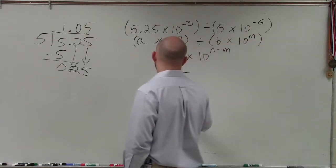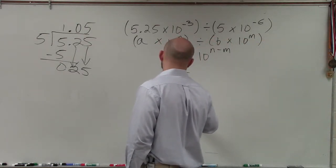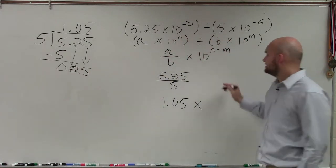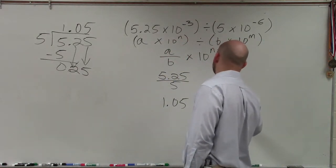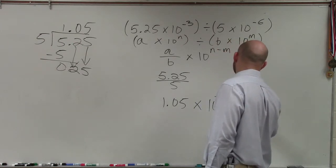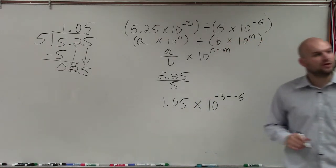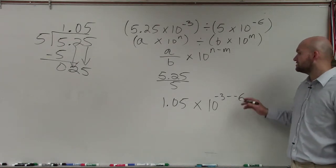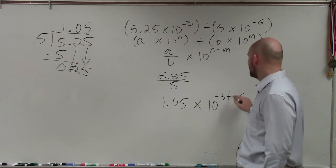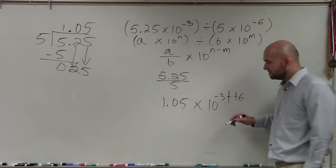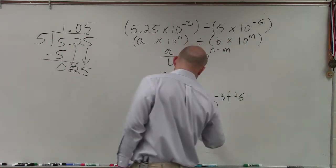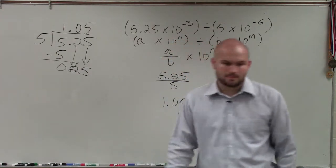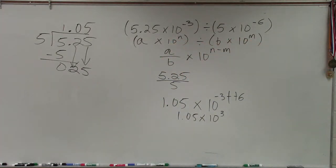So I have 1.05 times 10 to the negative 3 minus negative 6. Remember our properties of minus a negative. It's going to be negative 3 minus a negative, which will be a double negative. So your final answer is 1.05 times 10 to the third power.